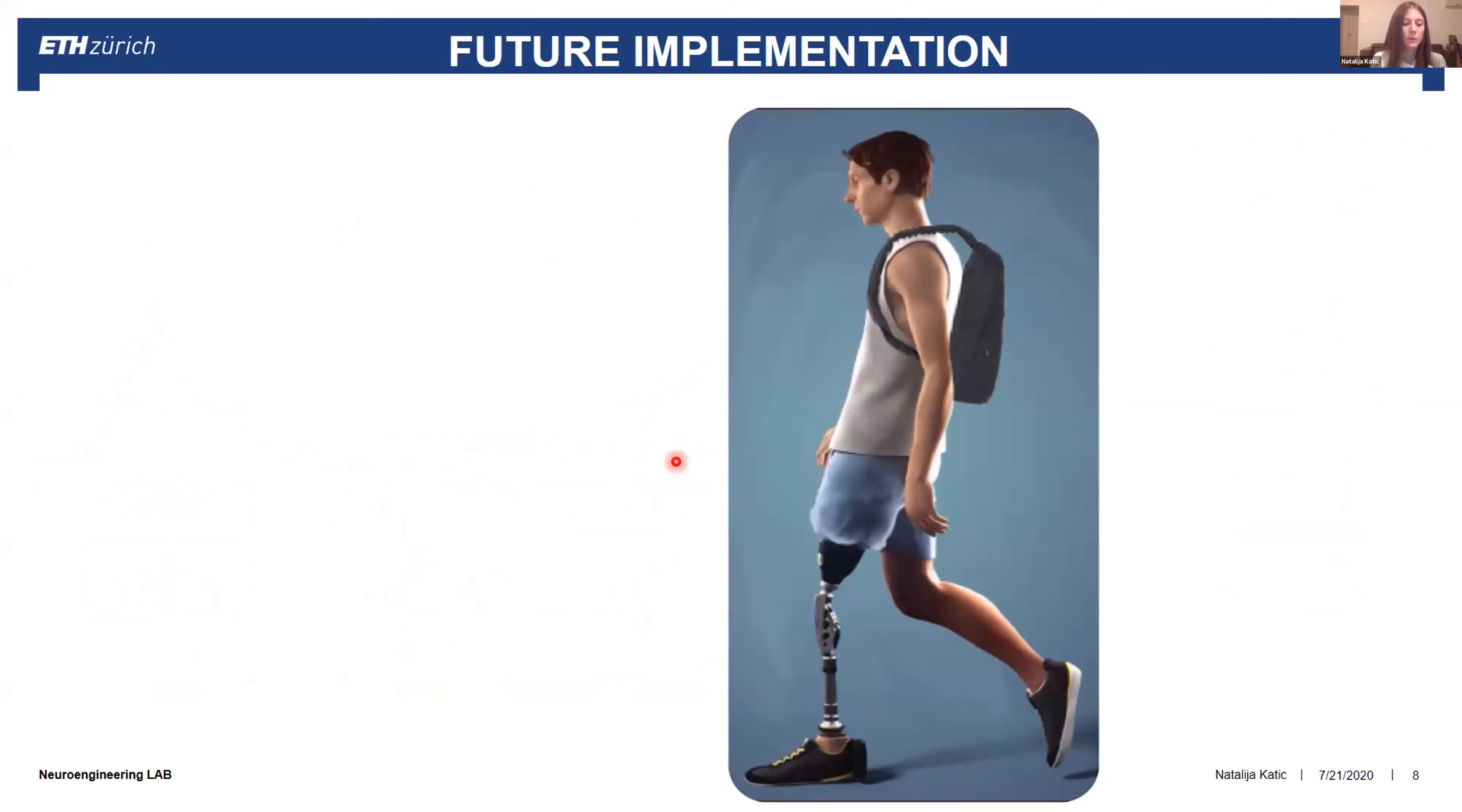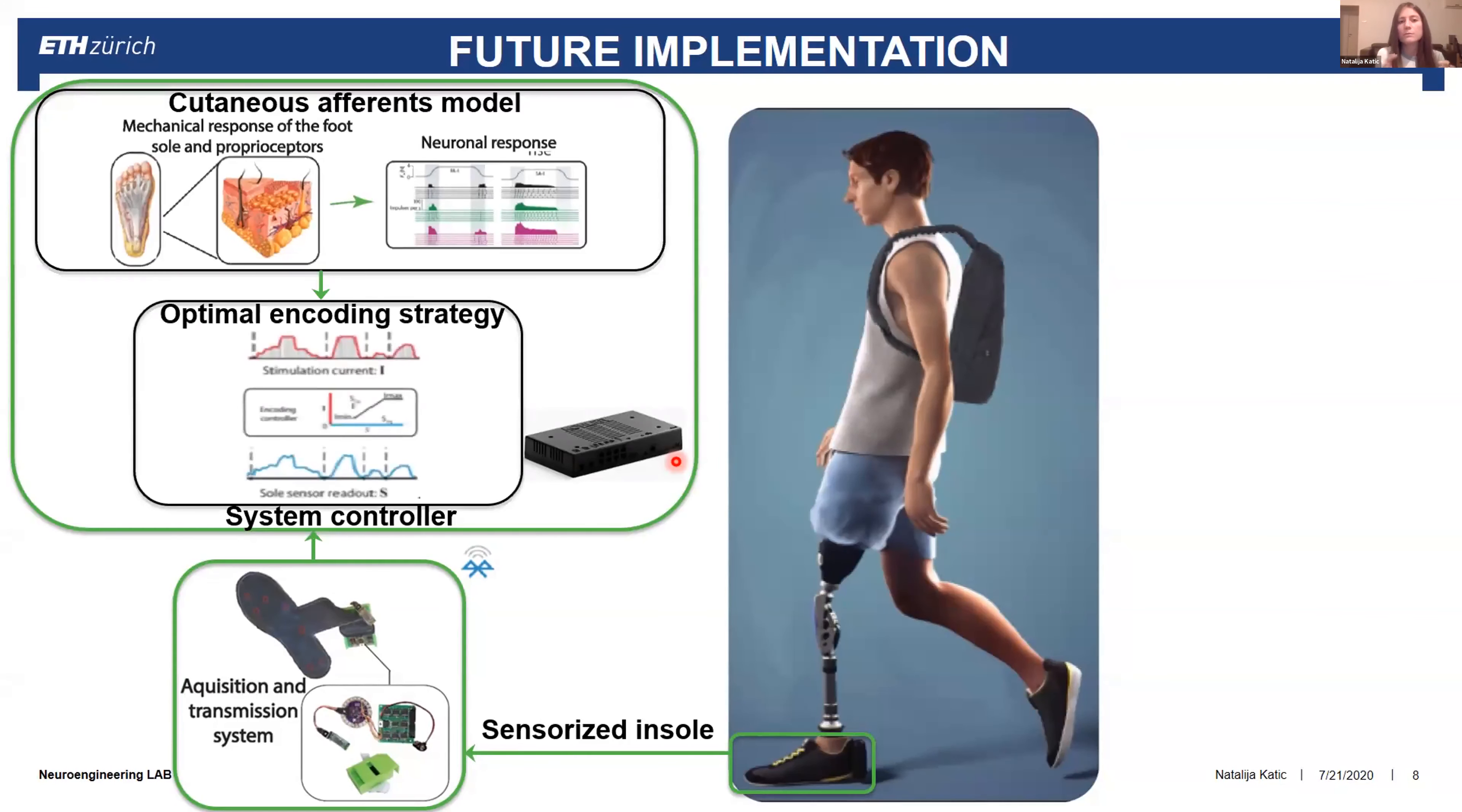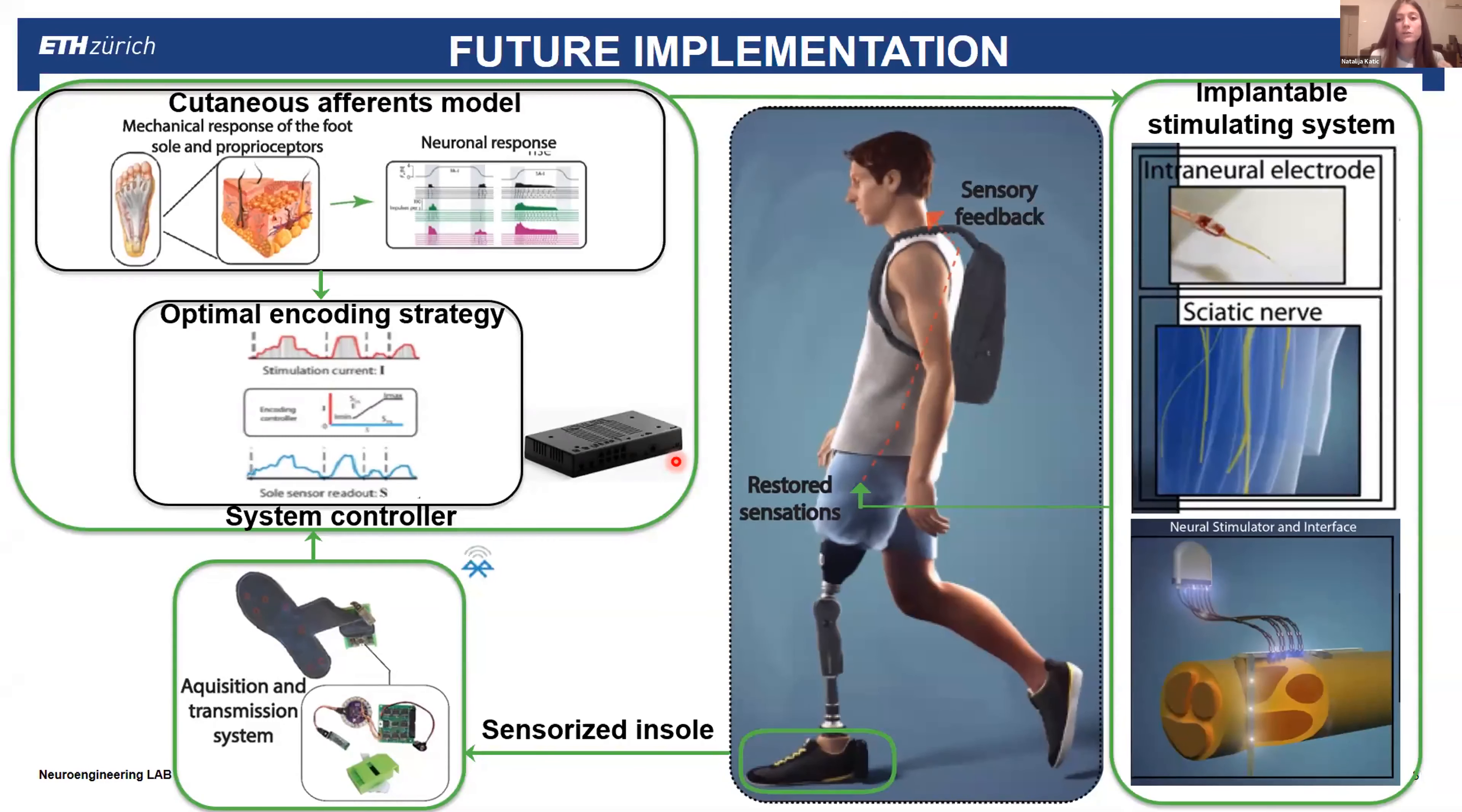we believe that we will be able to use it to improve the existing system that was constructed by our team in order to elicit the most natural sensations. The idea is to take the pressure data from the sensorized insole, transmit that to the system controller which has inside the cutaneous afferent models. The afferent model generates the neuronal response which can be used to define the optimal encoding strategy. This optimal encoding strategy will be transmitted to the implantable stimulator. With the implantable electrode, we'll be able hopefully to restore most natural sensation and resolve the sensory feedback to patients who lost them, like amputees or patients with some kind of neuropathy.